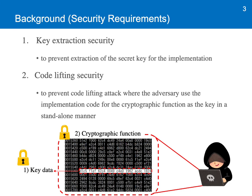Under such assumption, there are two requirements to design a new white box cipher. First of all, a white box cipher is required to provide key extraction security. This security ensures that it is secure against key extraction attack, where the adversary tries to extract the secret key from the implementation code. In addition, a white box cipher has to provide code lifting security. This security ensures that it is secure against code lifting attack, where instead of extracting the key, the adversary tries to steal the implementation code for the cryptographic function and use it as a large effective key in a standalone manner. These are the two security requirements to meet when designing a new white box cipher.